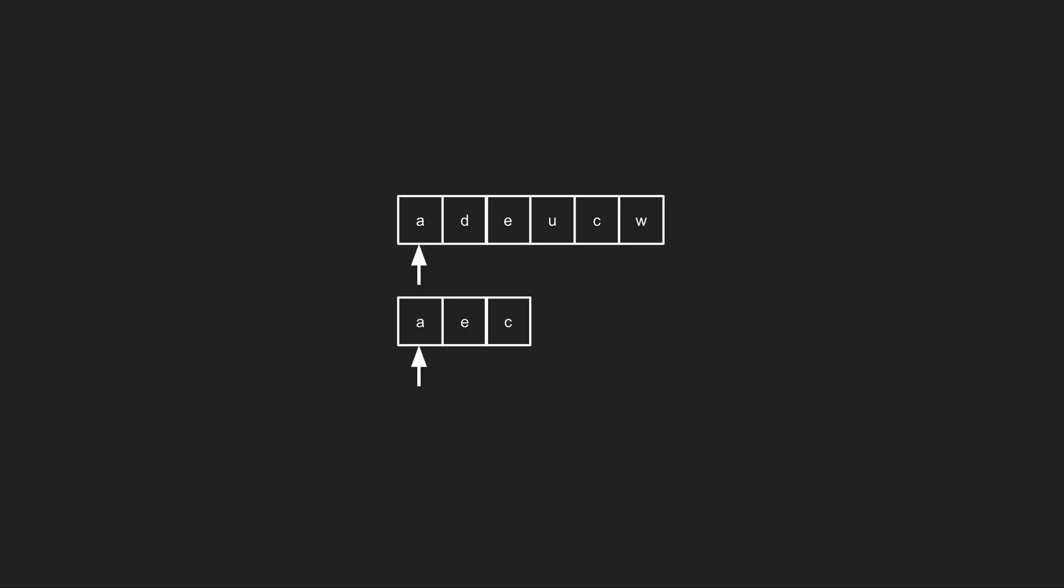How are we implementing that? We have two pointers, one pointing to the m string and another pointing to the n string. We start from the zero index and compare each character.